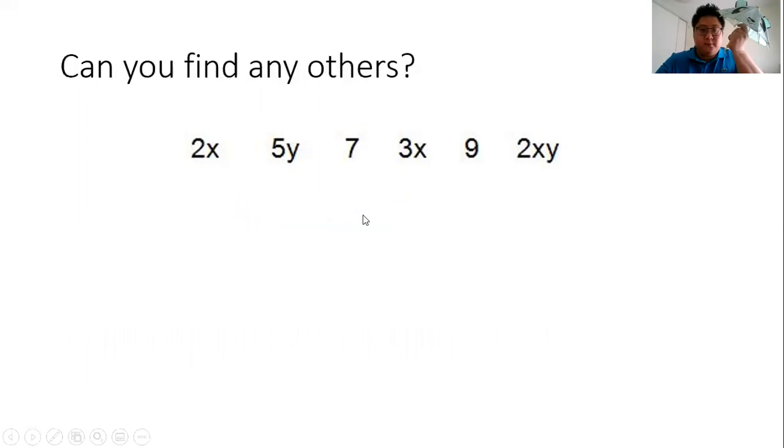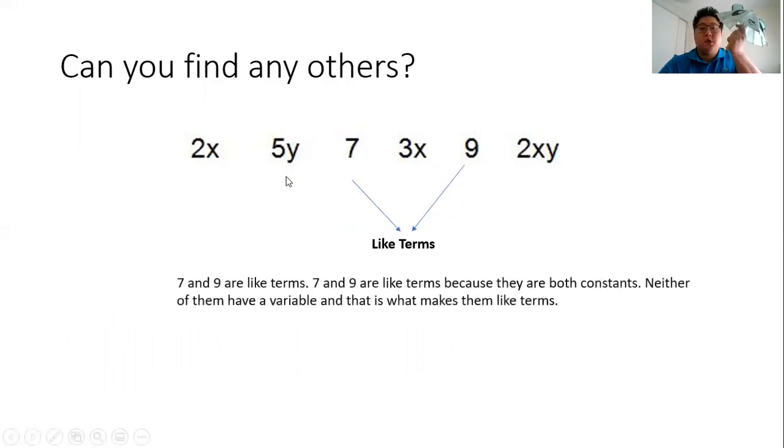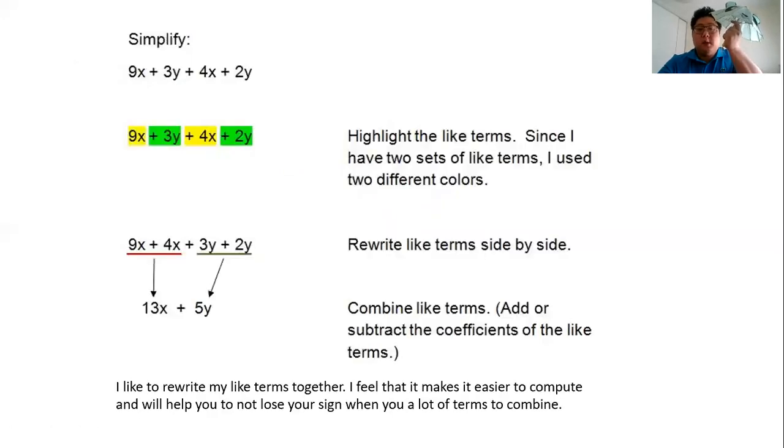Can you find any others? The like terms are the seven and the nine. The reason is they are just numbers; they have no variables. In a case where it's just numbers, we call them constants. So seven and nine are like terms because they are both constants.